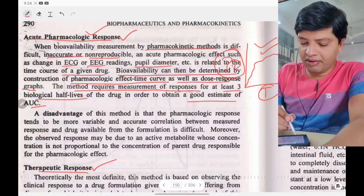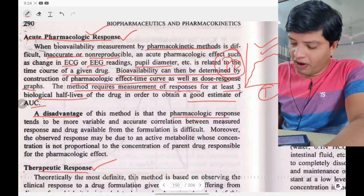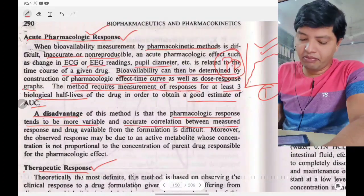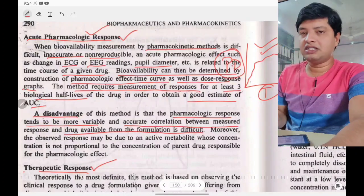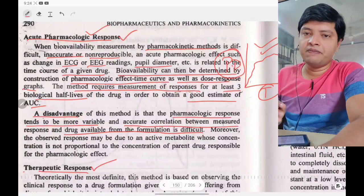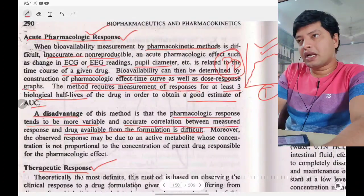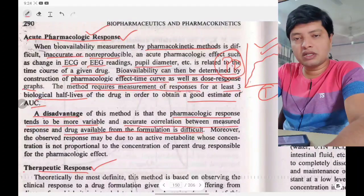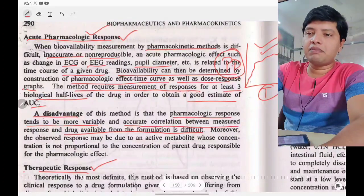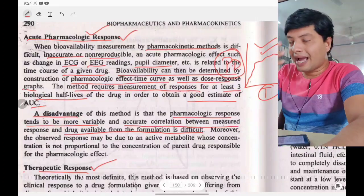The disadvantage of this method is that the pharmacological response tends to be more variable, and accurate correlation between the measured response and drug availability in the formulation is difficult. For example, pupil diameter varies under many conditions and cannot be measured exactly. Also, relating drug availability in the formulation to the pharmacological response is much more difficult compared to plasma drug concentration, where we can directly relate concentration to response.